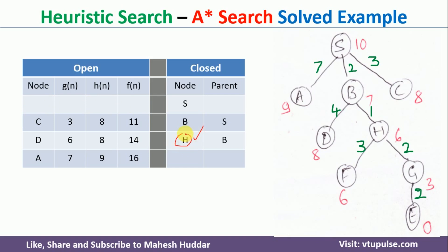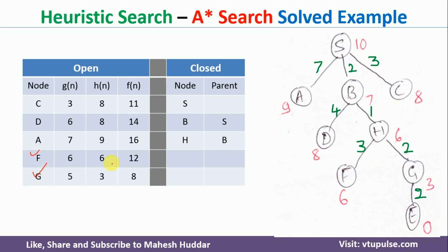We check whether H is a goal node — it is not. So we explore H, which has two successors: F and G. f(F): g(F) = 2+1+3 = 6, h(F) = 6, so f(F) = 12. f(G): g(G) = 2+1+2 = 5, h(G) = 3, so f(G) = 8. Sorting in increasing order, G comes first, so we bring G to the closed list.